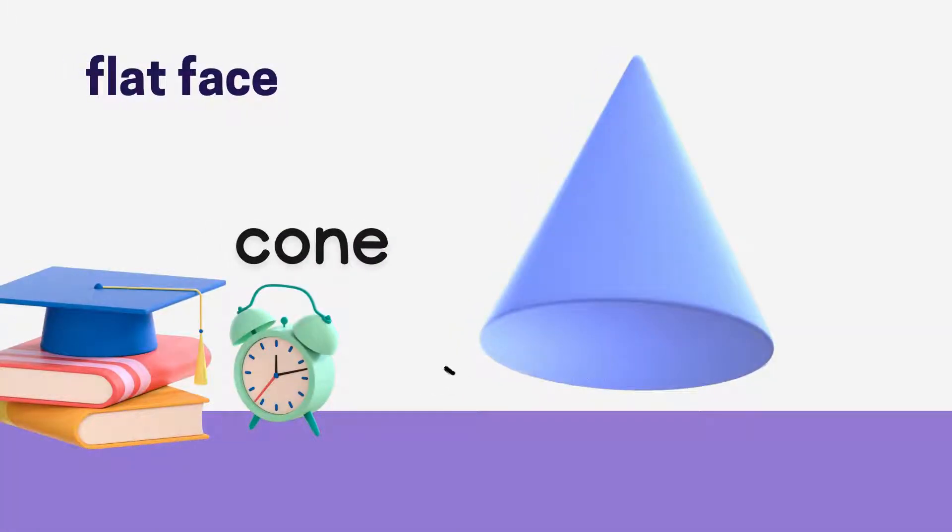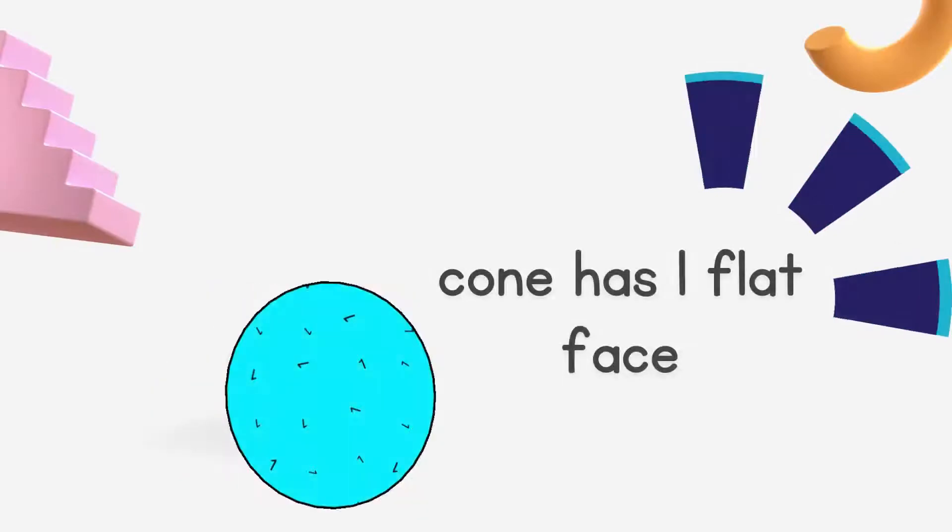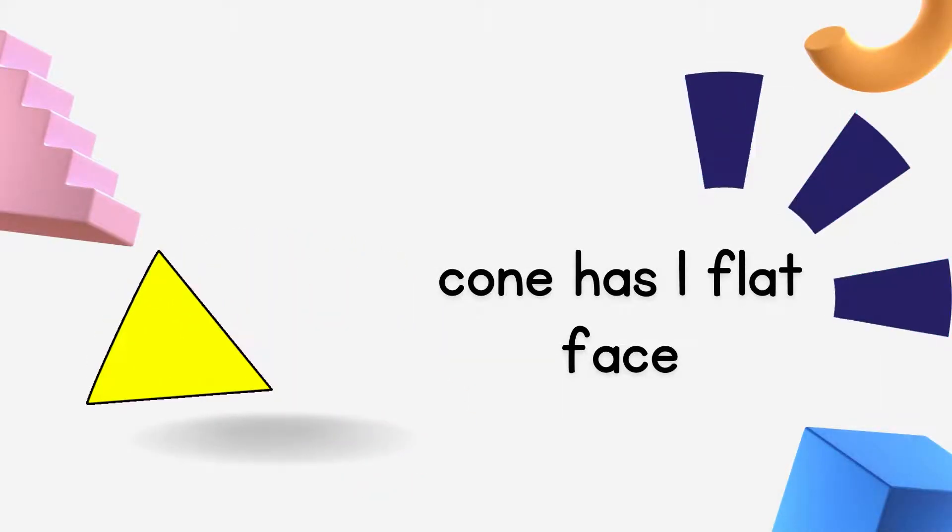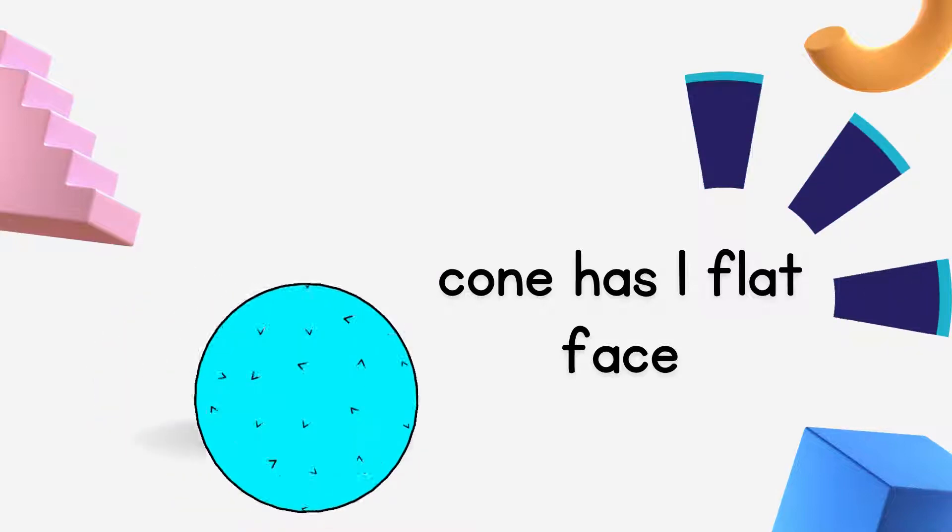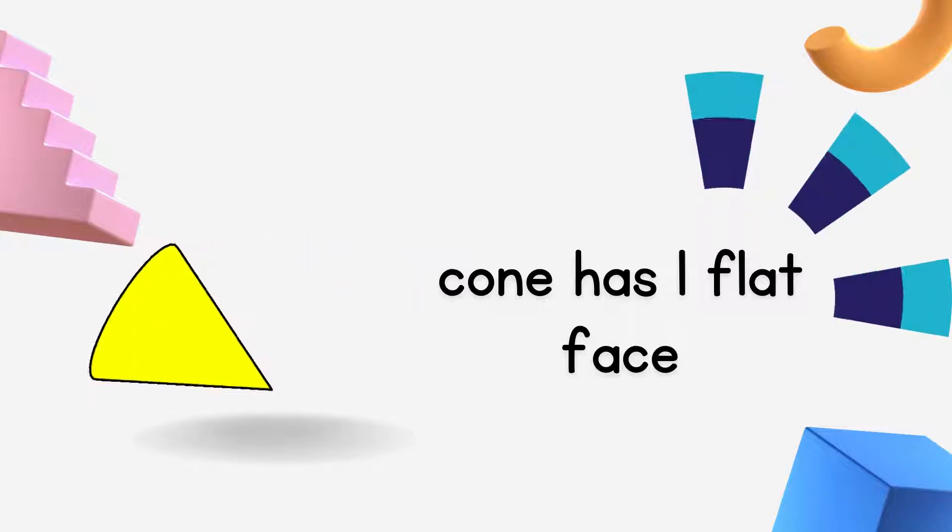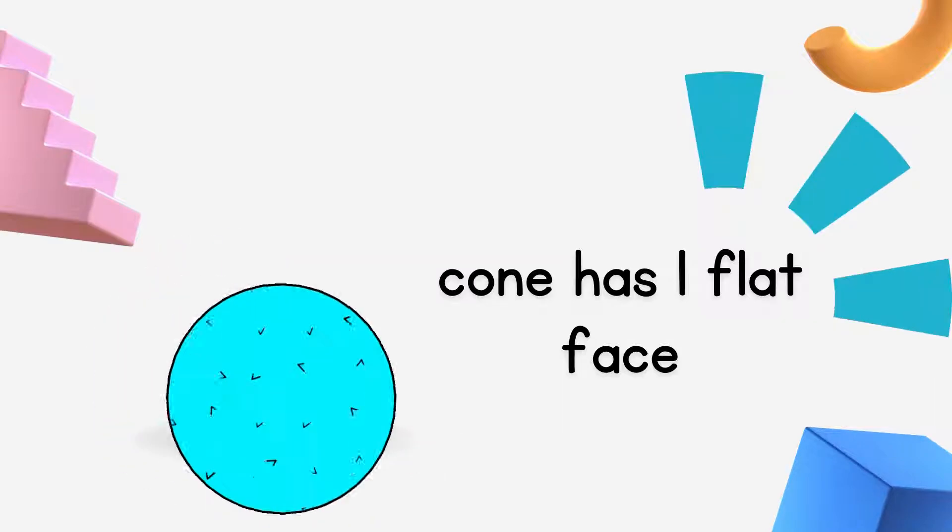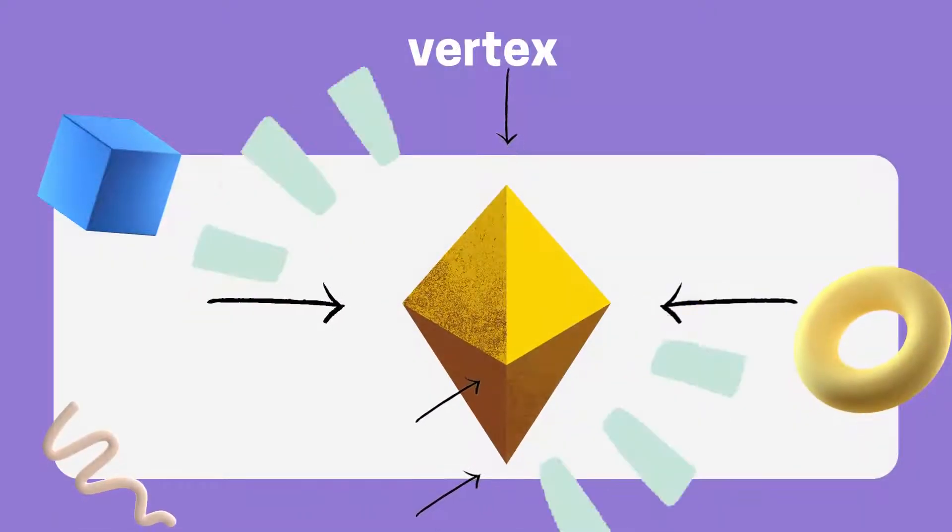Next is Cone. Cone also has a flat face. A Cone has 1 flat face. Cone has 1 flat face. Alright, we already looked at straight edges and flat face. Now, we are going to have a look at Vertex.